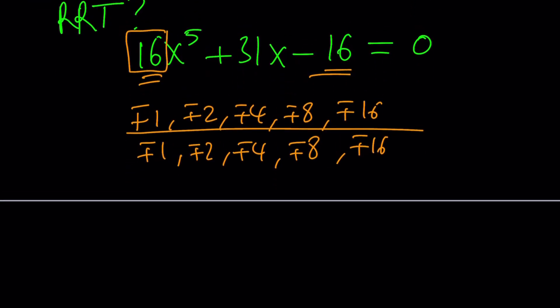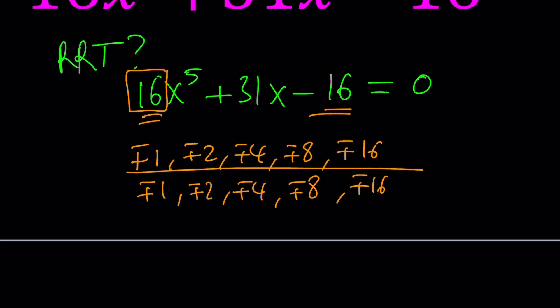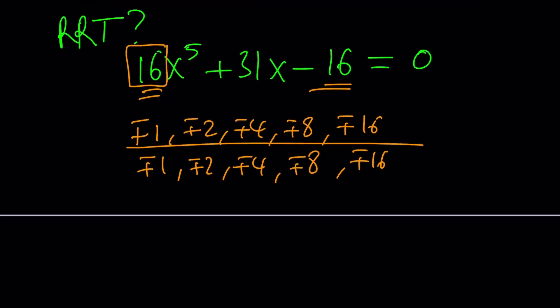So, here's what I'm going to do. X to the 5th is a perfect 5th power, but 16 isn't. But, 2 times 16 is 32, and 32 is 2 to the 5th power. You see what I see? Awesome. So, let's go ahead and multiply both sides by 2.